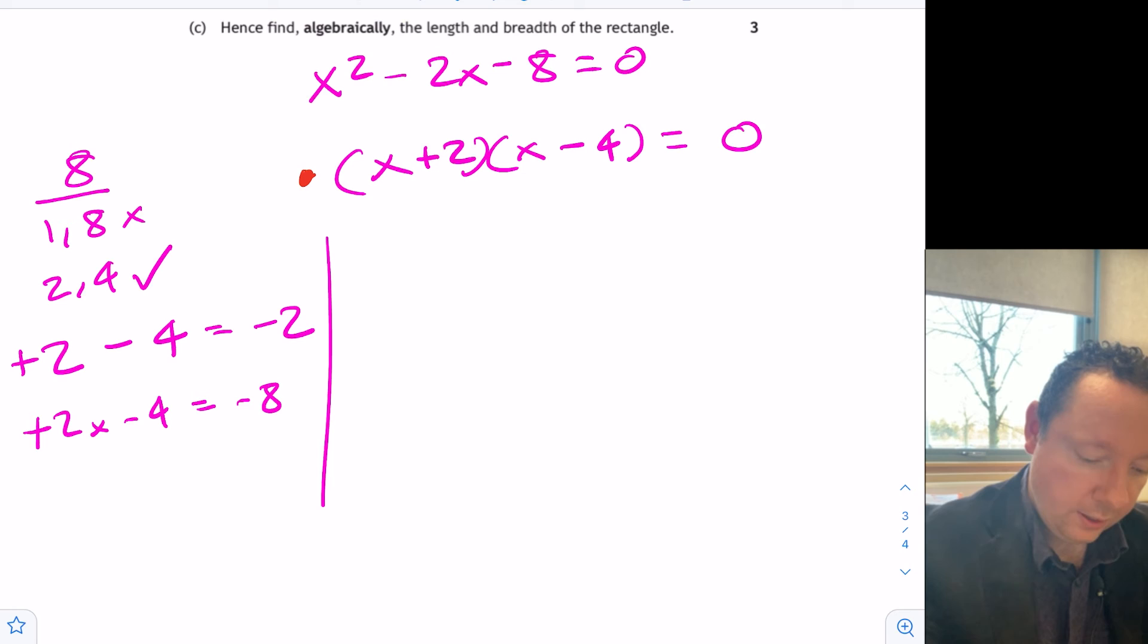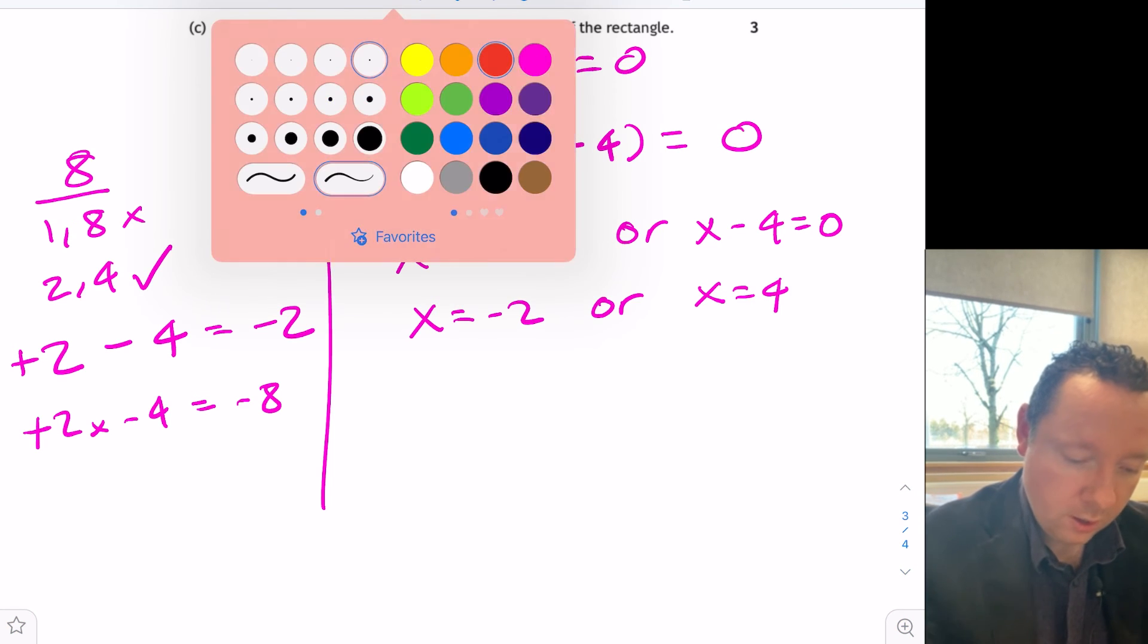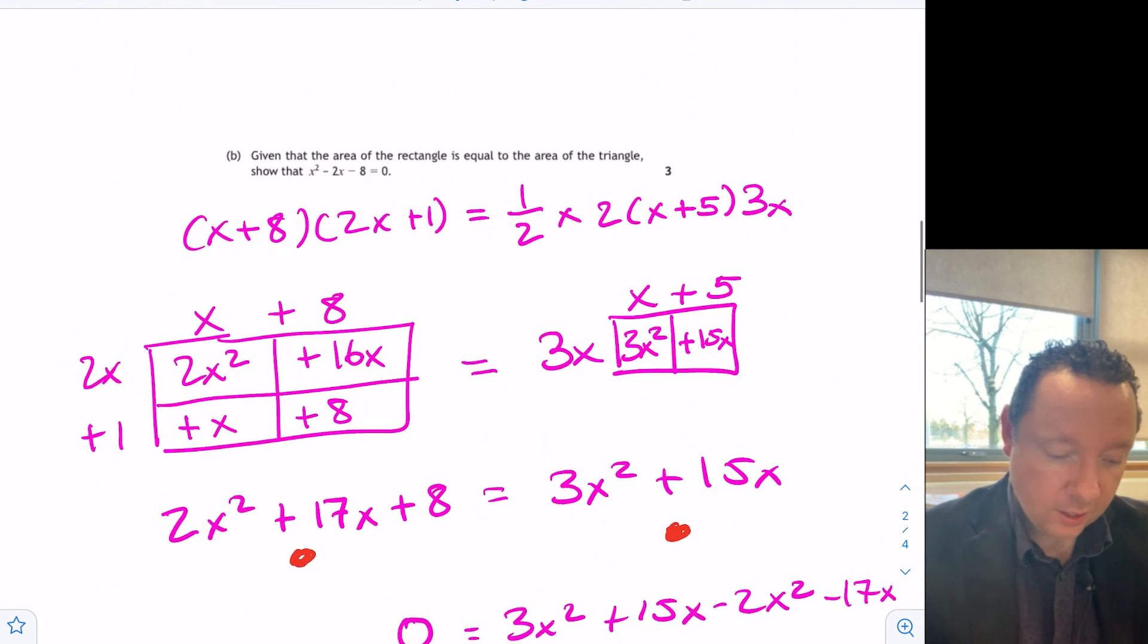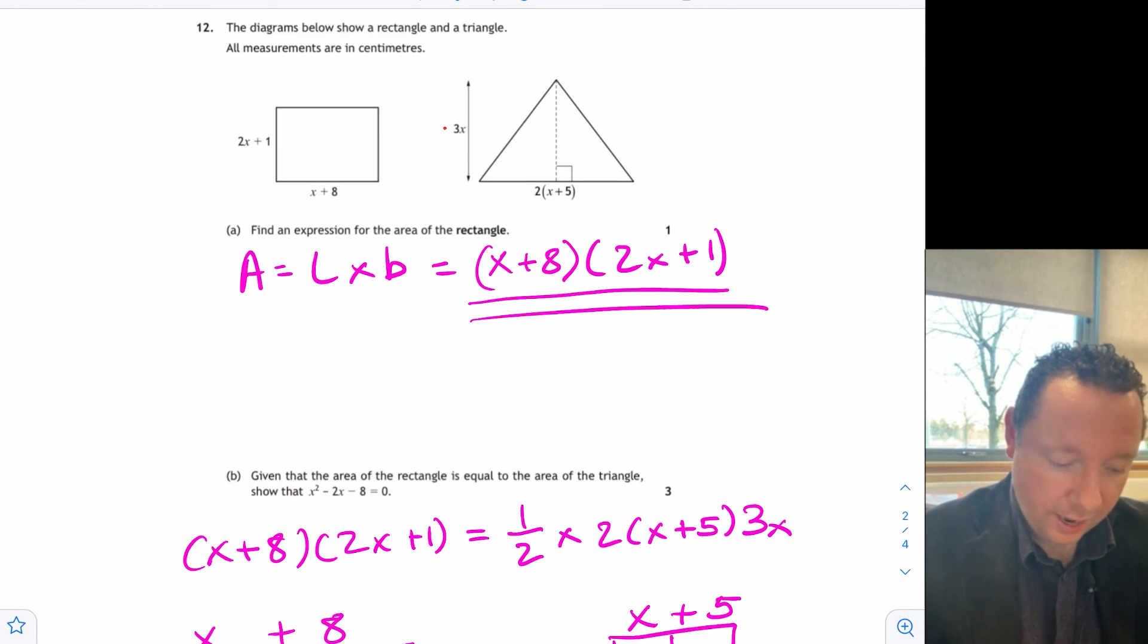And then for solving, you can then say x plus 2 equals 0, or x minus 4 equals 0. So that gives me the x equals minus 2, or x equals 4 for a second mark. And then, because this is a question in context, and we're talking about actual lengths of the triangle and rectangle, if we go back up and look at the lengths, we've got x add 8 on the rectangle. Well, that means that we've got 4 plus 8, and we've got minus 2 add 8.